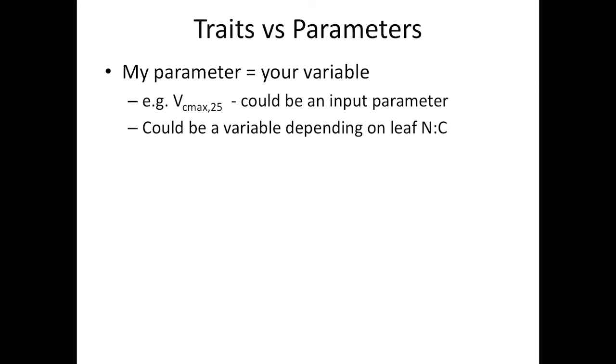It's not that simple, though, because my parameter might be your variable. Different models have different sets of parameters. Some people take VCmax as their parameter, whereas others try to predict leaf nitrogen content and derive VCmax from that. So it's not as simple as saying this is a trait because it's a parameter — it's a little bit context-dependent and model-dependent.